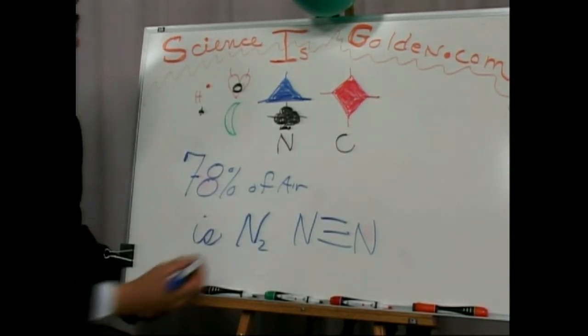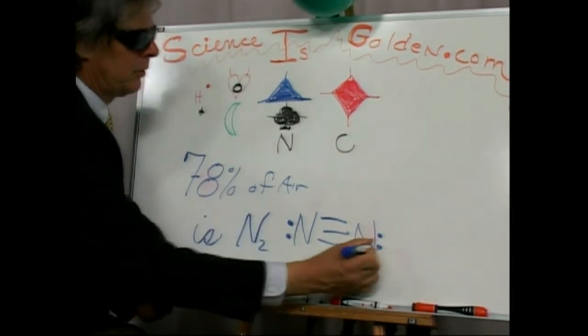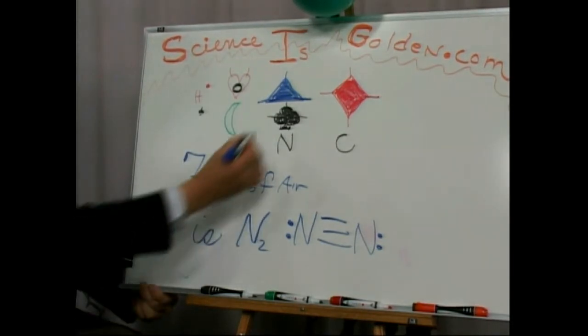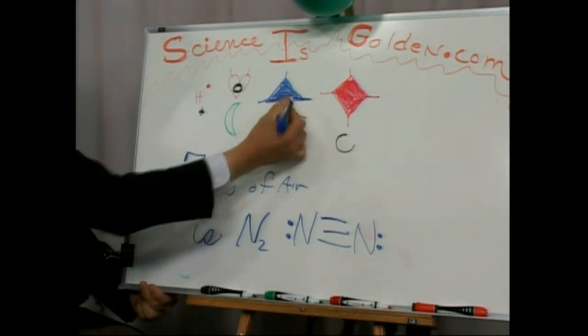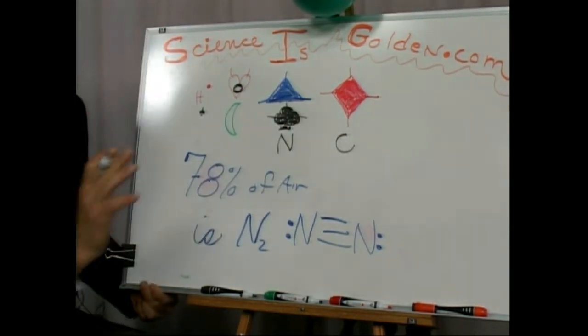And the way you'll really draw this is having electron pairs, because you always got to count the electron pairs. So the triangle really has a little pair of electrons there. The bottom of the clubs has little electrons there. But we're just dealing with bonding here.